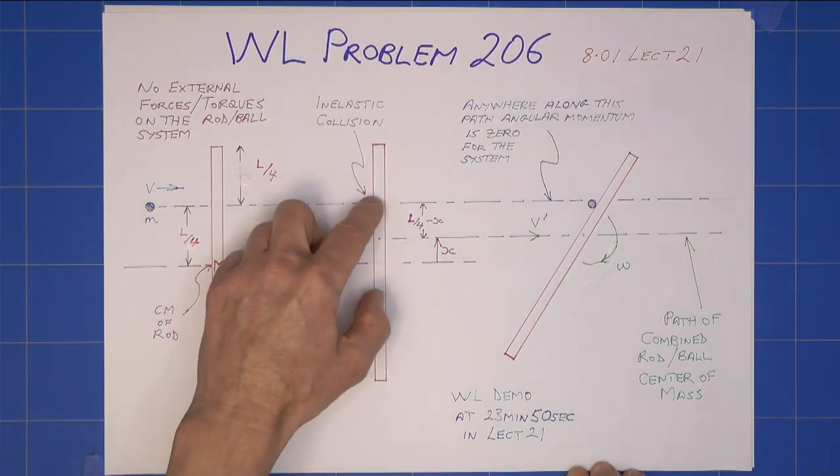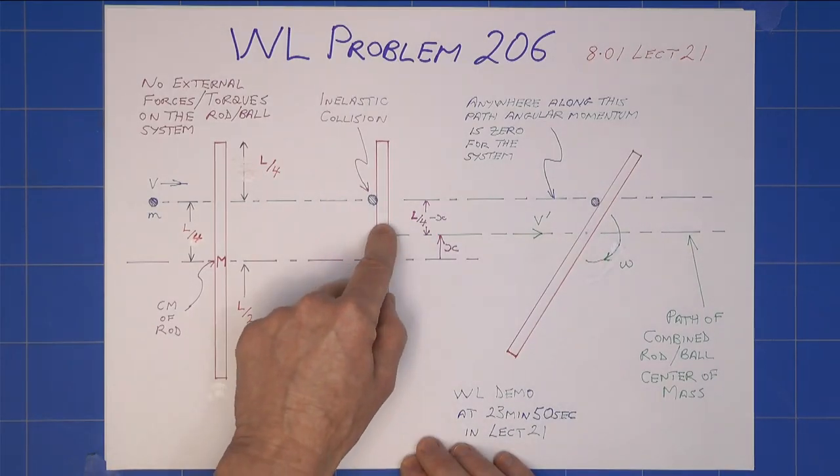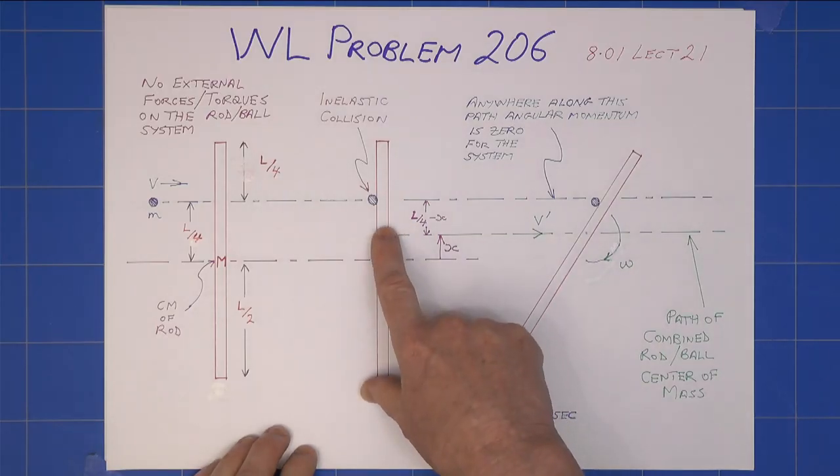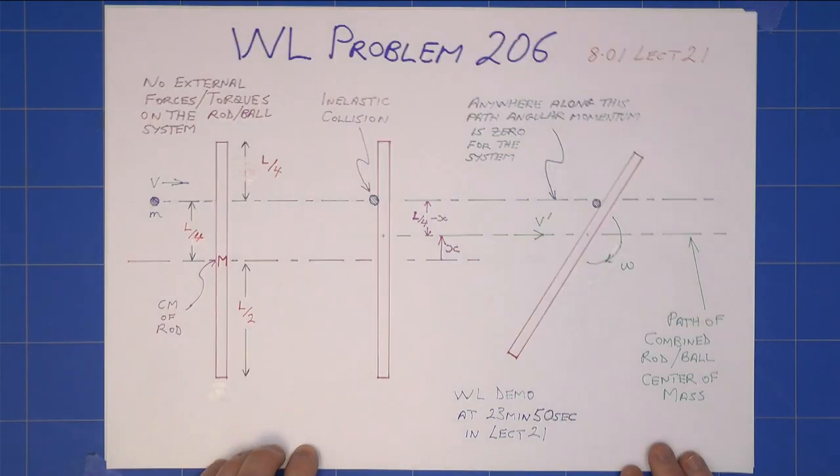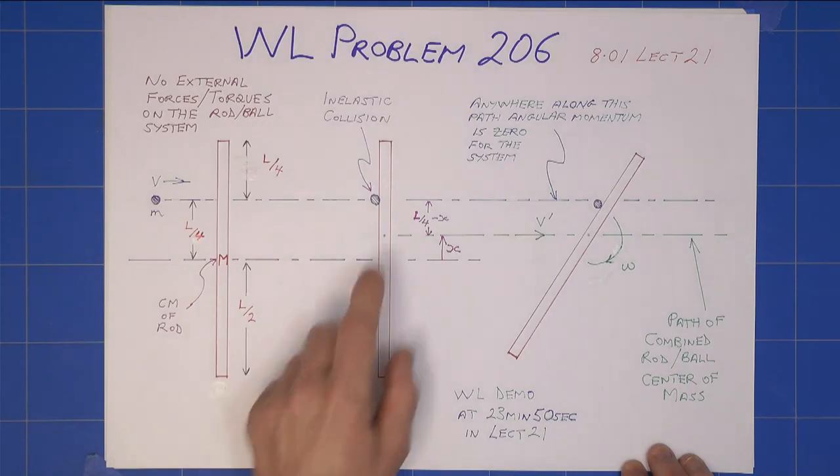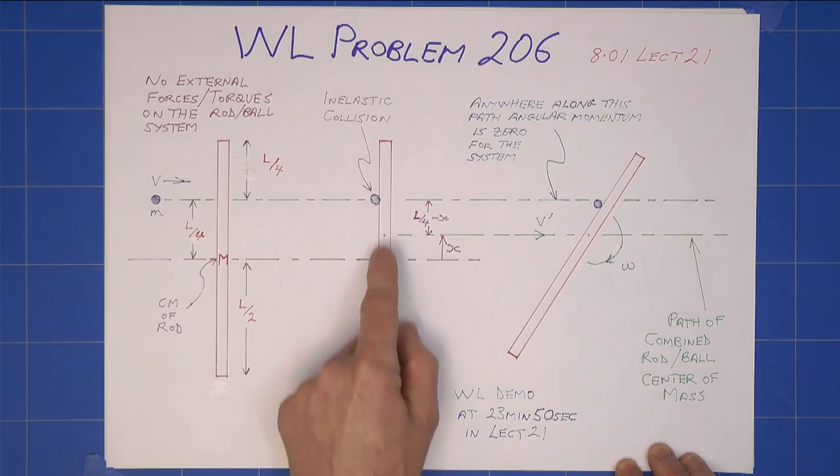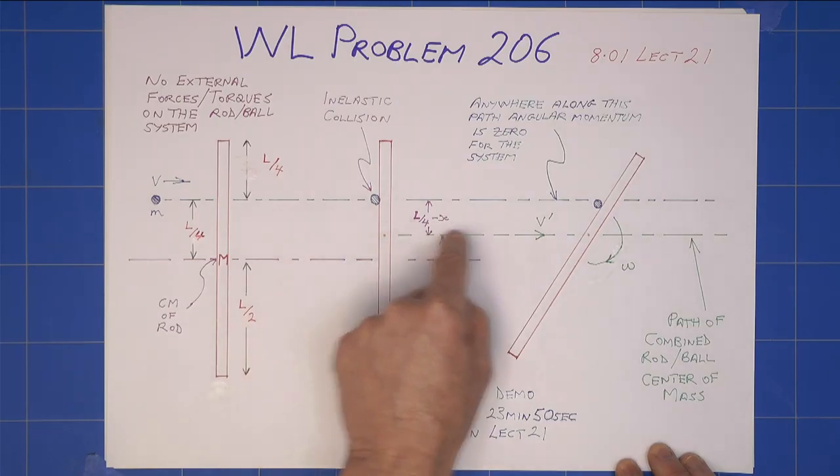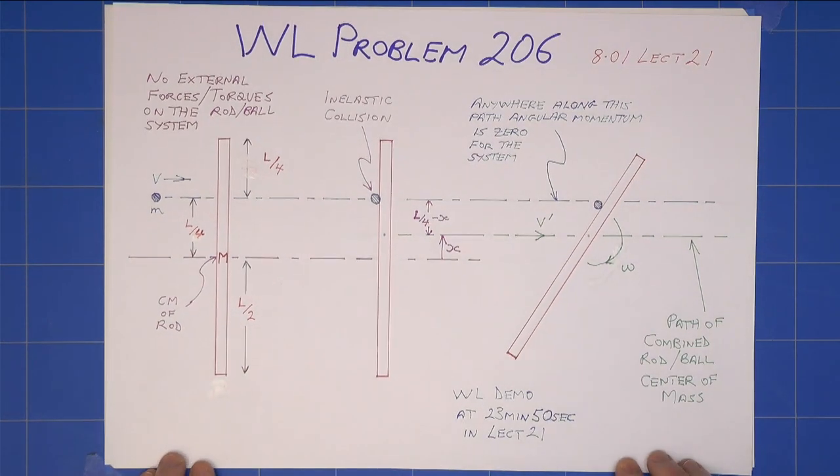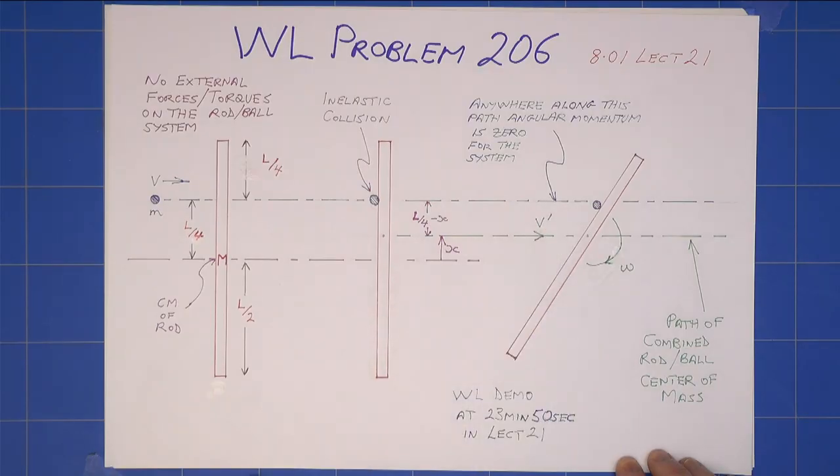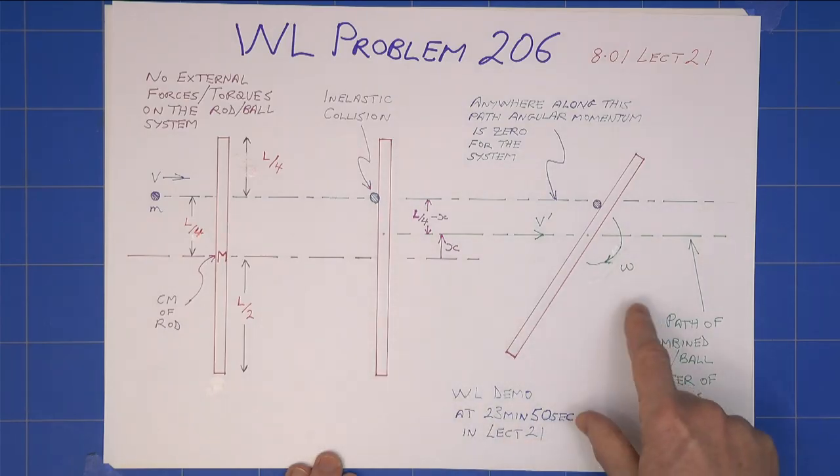We need to note that when the clay ball sticks to the rod, there will be a centre of mass for the system. And it's that centre of mass about which the clay ball and rod will rotate, as I've shown here. And the centre of mass will be the only point that travels in a straight line. Everything else will be rotating. It will have a velocity, I've given it v prime, and there will be an angular velocity about the centre of mass of omega.